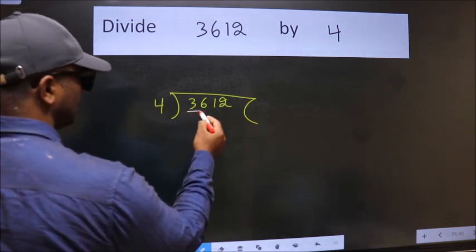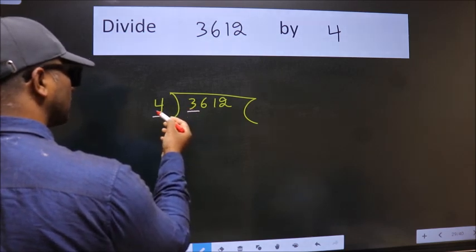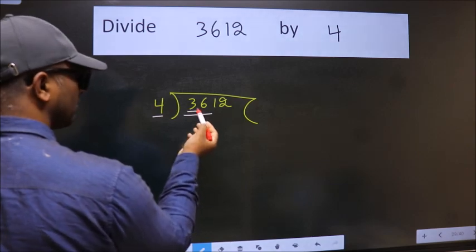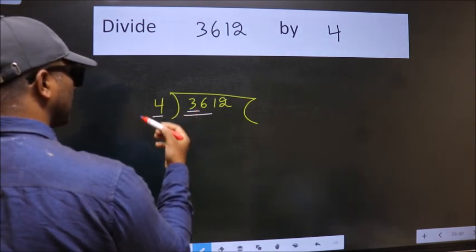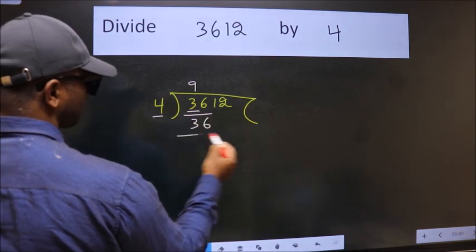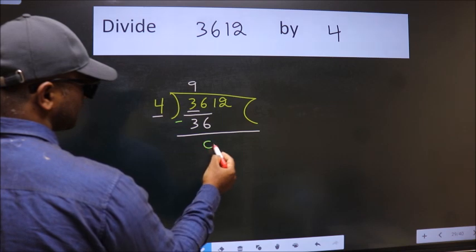Here we have 3. Here 4. 3 is smaller than 4, so we should take 2 numbers, 36. When do we get 36 in 4 table? 4 9s 36. Now we should subtract. We get 0.